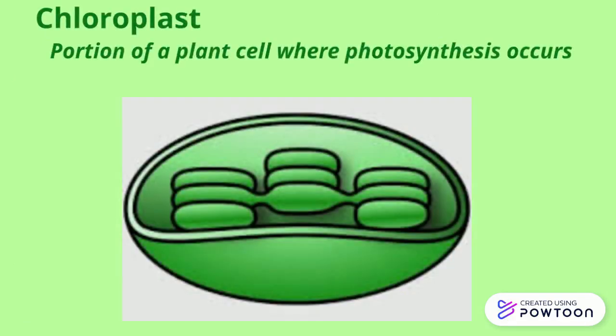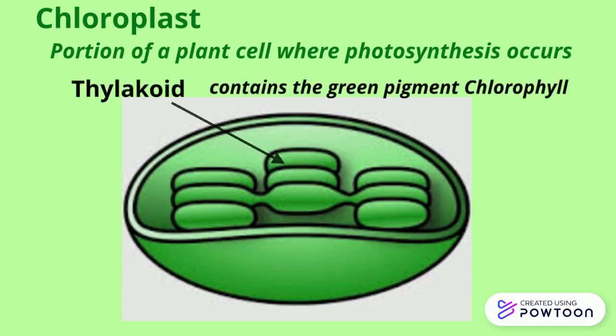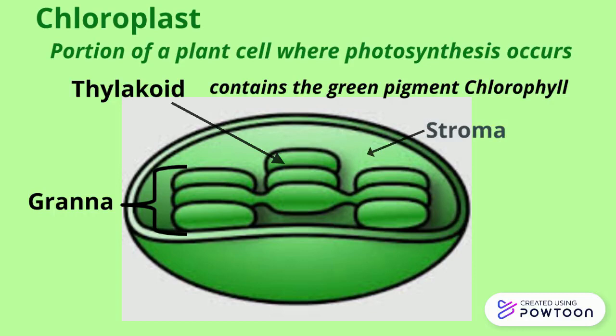The portion of the plant cell where photosynthesis occurs is the chloroplast. The thylakoids are the little tiny sacs that contain the green pigment called chlorophyll. The grana is the stack of all of the thylakoids, and the stroma is the fluid that surrounds all of the grana.